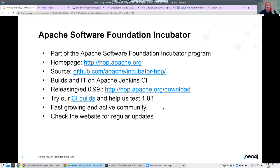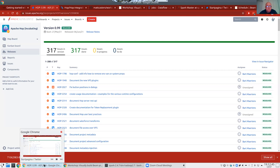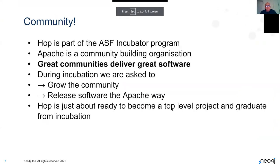We're a pretty fast growing, active community. For the 0.99 release we just did, we fixed 317 issues in a couple of months. Community is what we're about. Apache calls itself a community-building organization, and that it is - great communities deliver great software. We get all sorts of really cool use cases and scenarios that allow us to architect our software in a better way, directly from users rather than product management. We were asked to grow the community and release software the Apache way, and our mentors say Hop is about ready to become a top-level project.